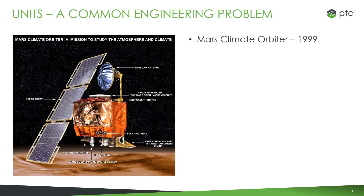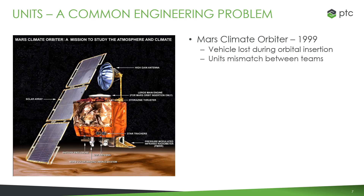Another common engineering problem that product development teams face is managing their system of units. Back in 1999, NASA launched the Mars Climate Orbiter. After nine months of travel, it performed an orbital insertion maneuver by firing its thrusters. The vehicle ended up at a much lower altitude than planned. It either burned up in the atmosphere or skipped off the atmosphere into outer space. Why did this happen? One team's software performed its impulse calculations in English units while everything else was done in metric units. This simple mistake slipped through multiple levels of checking, resulting in the loss of the vehicle at a cost of $327.6 million and thousands of hours of work.